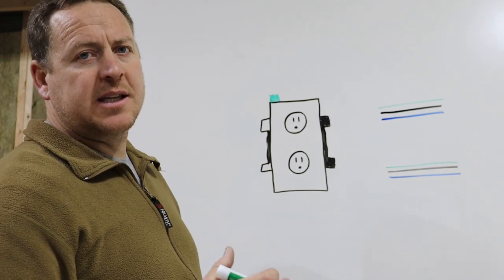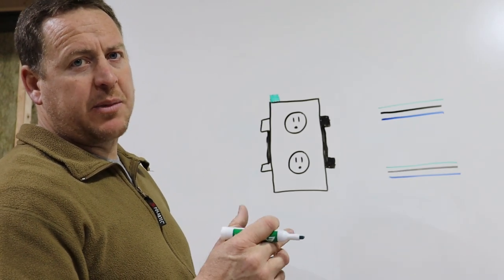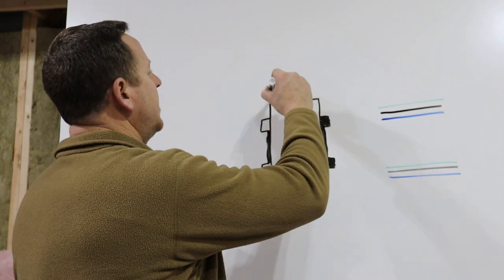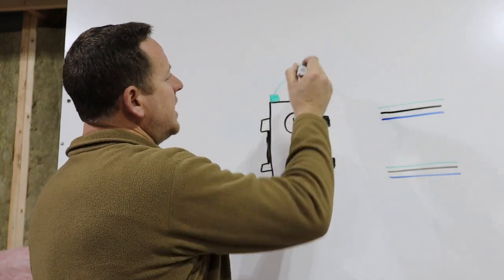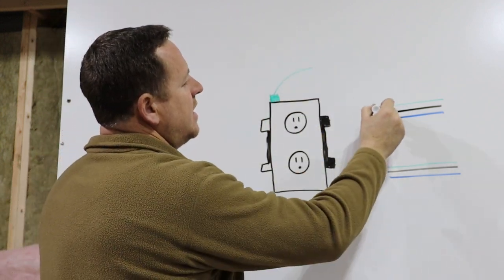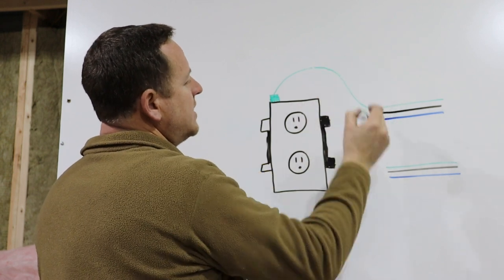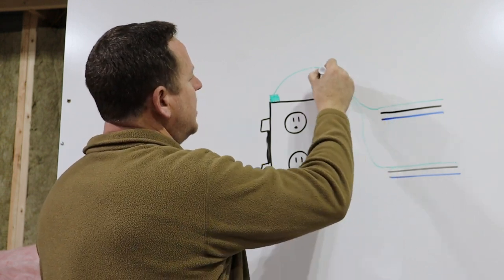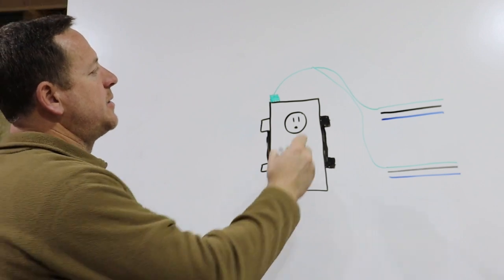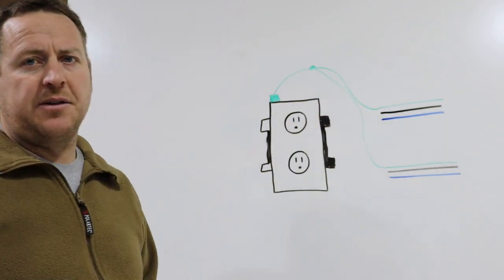To pigtail the ground, I got a six inch piece of that bare copper wire, the ground wire, and connected it to the screw and came out. Then I ran these ground wires up to the end of this pigtail and connected them together.